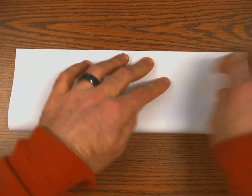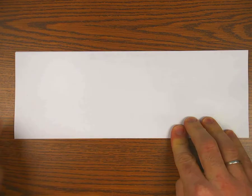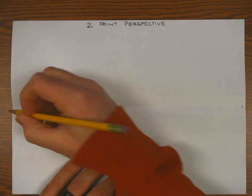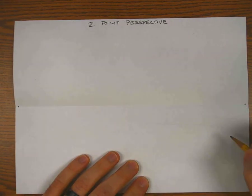I'm going to fold it in half hot dog ways. If you want to just draw a line across as your horizon line, that's just fine. I'm going to put a dot on either side here, my two vanishing points.